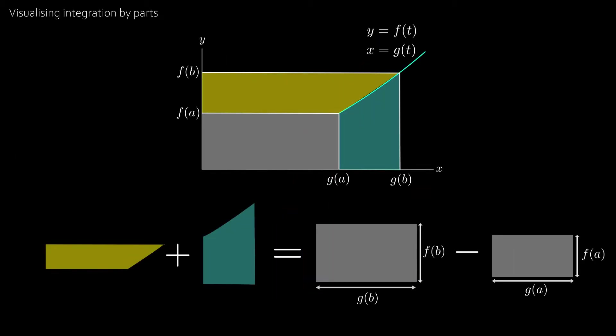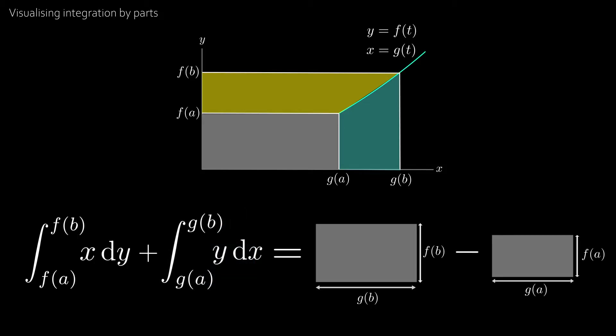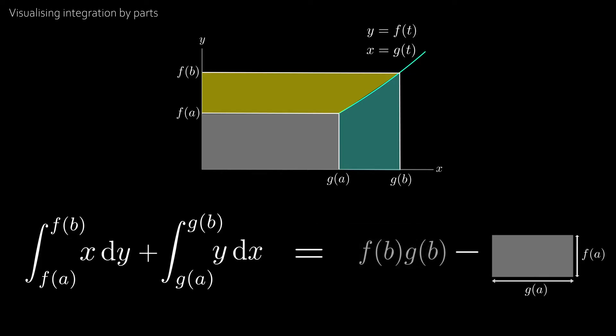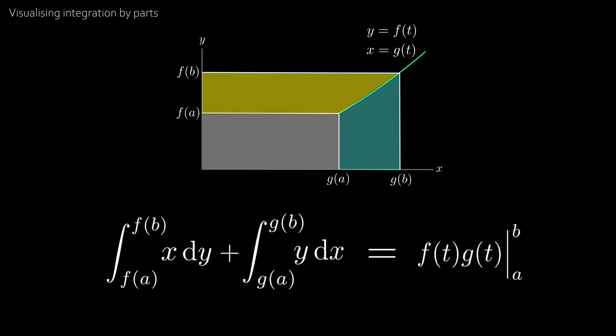So back to our problem, the yellow area is the integral between f of a and f of b of x dy. And the blue area is the integral between g of a and g of b of y dx. Now the large rectangle has area f of b, g of b, and the small rectangle has area f of a, g of a. Now we can write the right hand side as f of t, g of t, with a straight line down with b and a at the top and bottom.